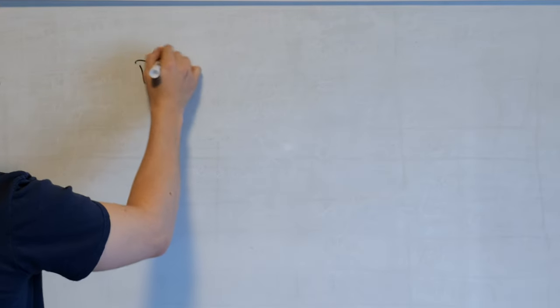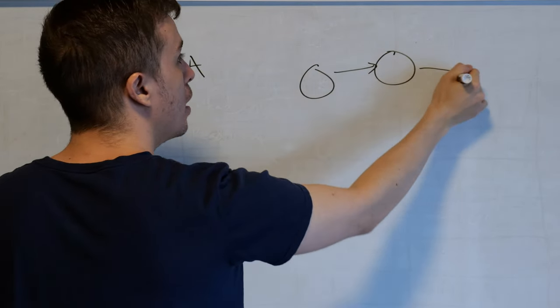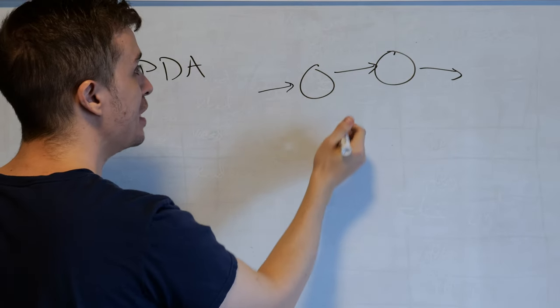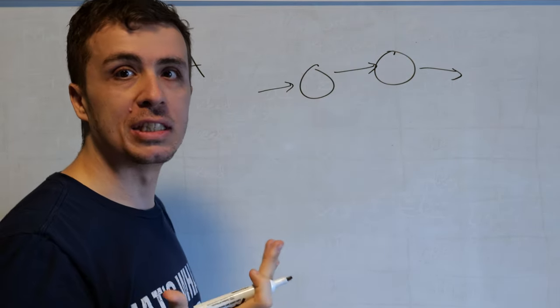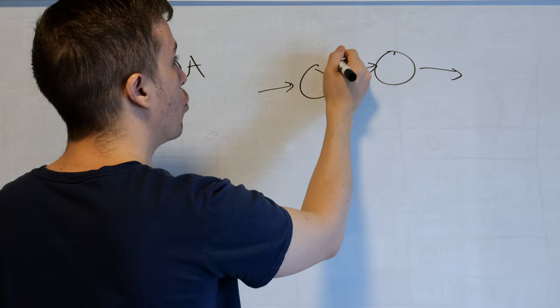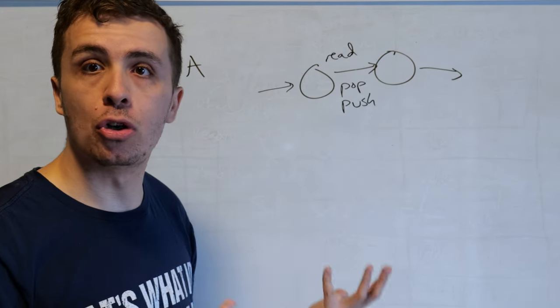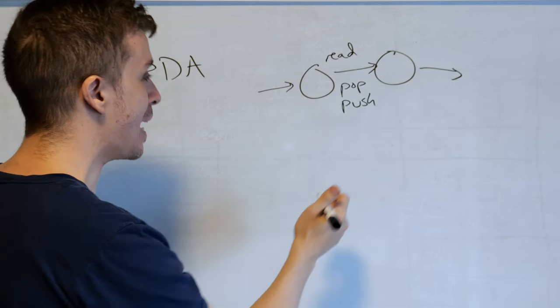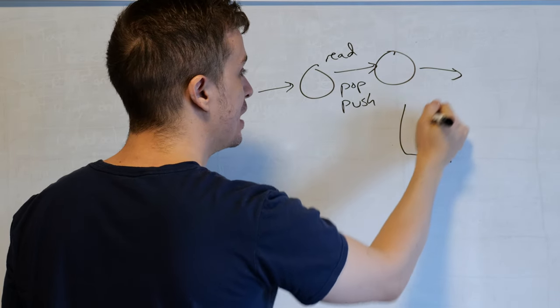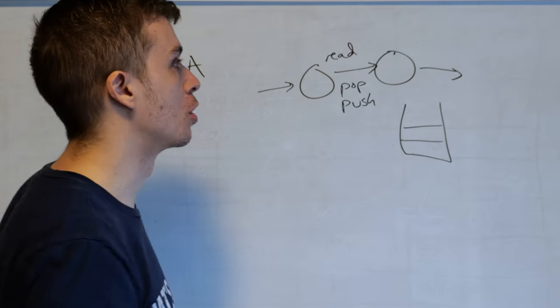So a pushdown automaton essentially is just a state machine where we have a bunch of states like this, and each one of these transitions between the states can do one of three things. So they can read a particular thing, and they're allowed to push or pop from a stack. So the PDA has this stack that is going to grow and shrink depending on what the transitions are going to do.